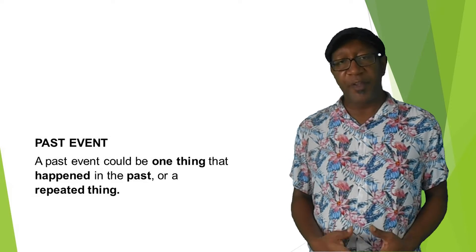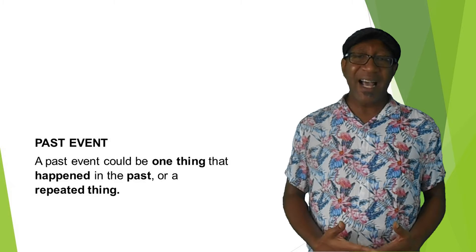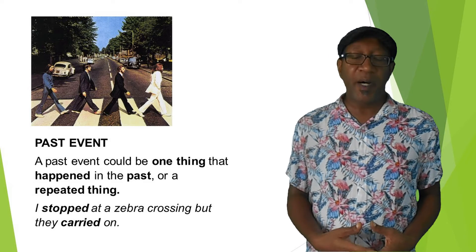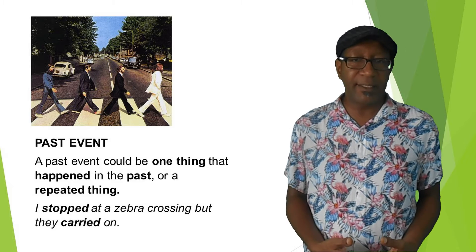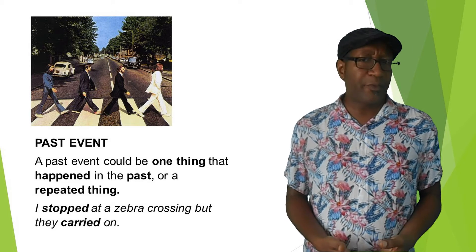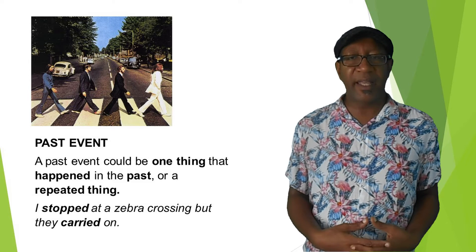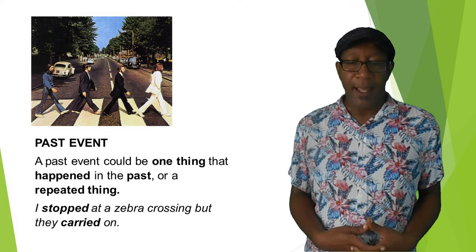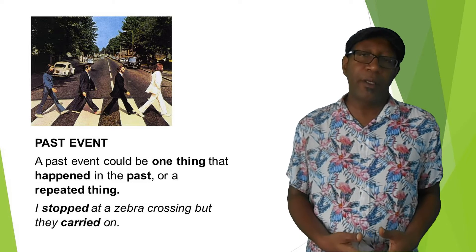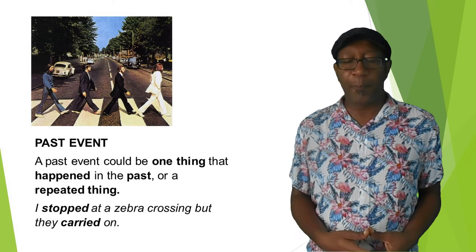For example we have here the sentence 'I stopped at a zebra crossing but they carried on' and you can see that the verb 'stop' gets a double P and 'carry', the verb to carry, Y is turned into I.